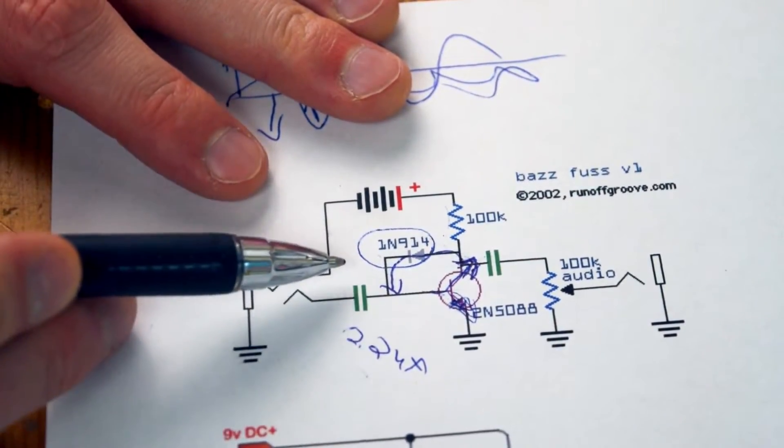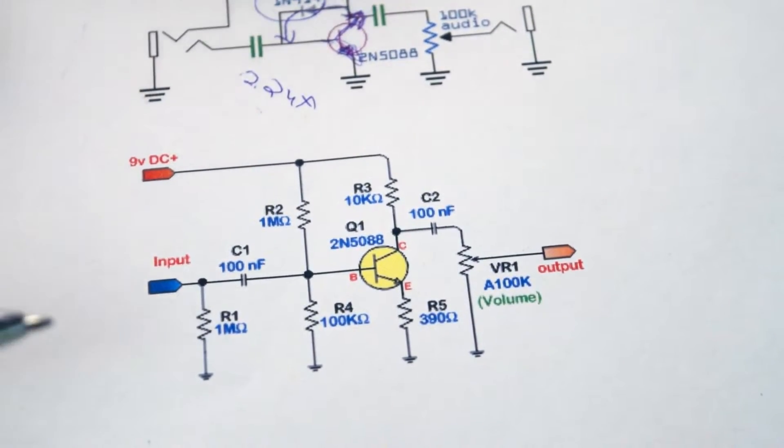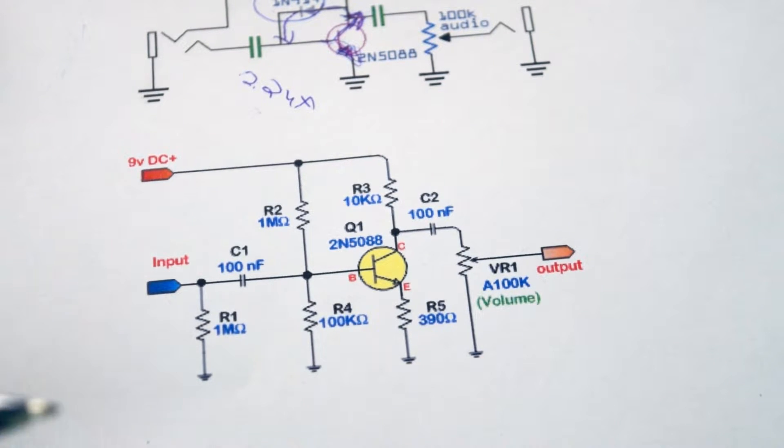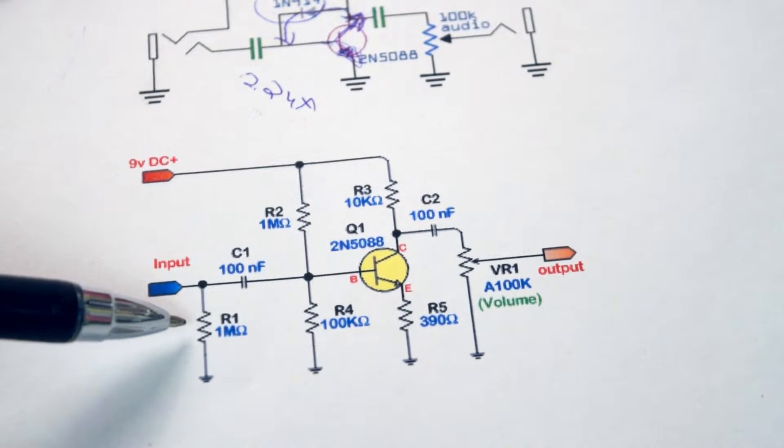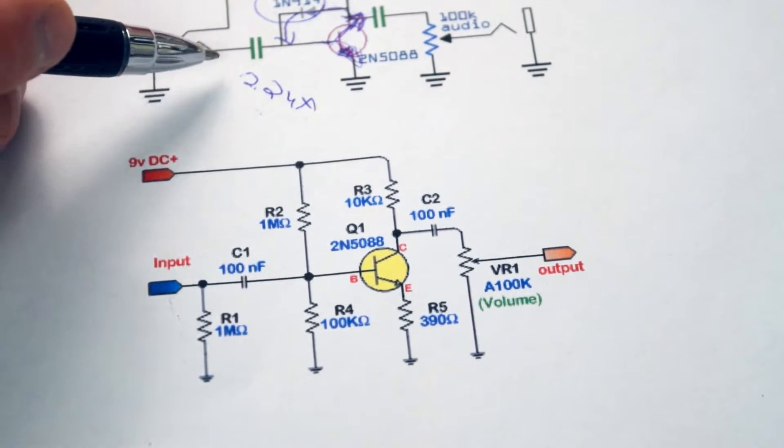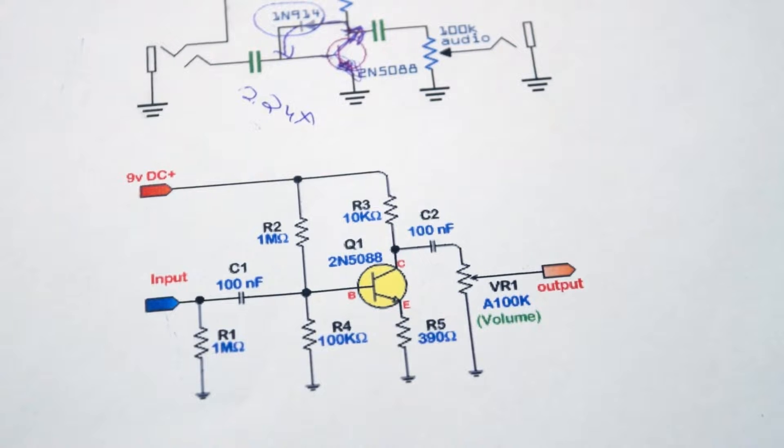If you compare this Baz Fuss with this schematic, this schematic is an LPB-1 booster from Electroharmonics. You can see for the most part, it looks very, very similar. You've got this guy here. Now this resistor is more of a quality of life resistor. It's one meg. It's there so that if you press on the foot switch, any kind of popping noise will get filtered to ground. So you could put that in with your Baz Fuss. It wouldn't be a problem. It's not a bad addition to think about to avoid any popping.